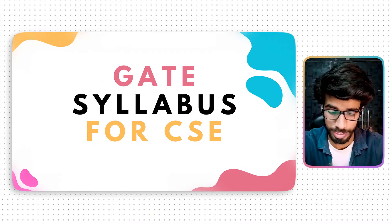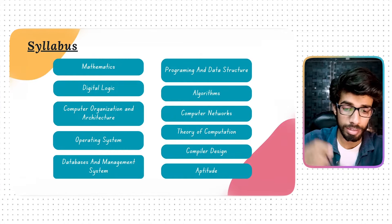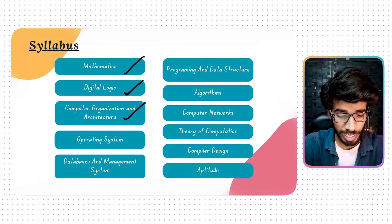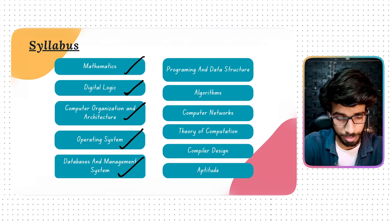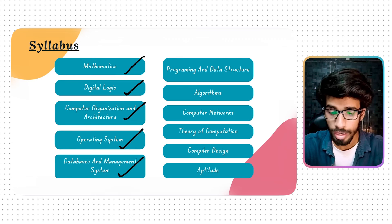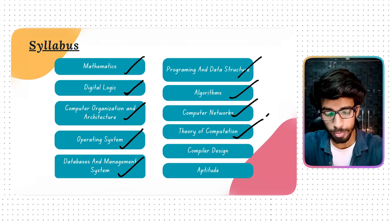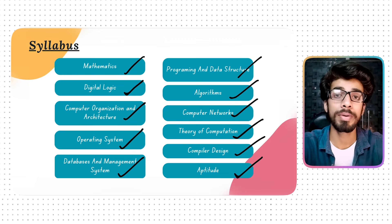We get to see a total of 11 subjects. So which subjects do we have in CSE? Mathematics, Digital Logic, COA (Computer Organization and Architecture), OS (Operating System), DBMS (Database Management System), Programming and Data Structures, Algorithms, Computer Networks (CN), TOC (Theory of Computation), Compiler Design, and Aptitude. So here we have a total of 11 subjects in CSE.